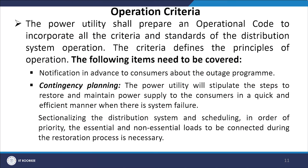The criteria define the principles of operation covering: advance notification to consumers about outage programs; contingency planning where the power utility stipulates steps to restore and maintain power supply quickly and efficiently after a system failure; and analyzing the distribution system to schedule restoration in order of priority for essential and non-essential loads. Hospitals and emergency networks must be given priority over non-essential loads.